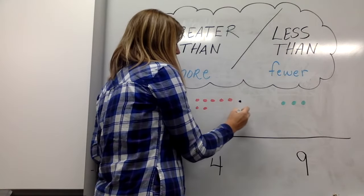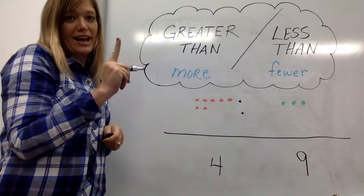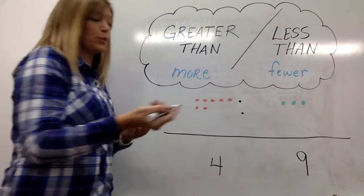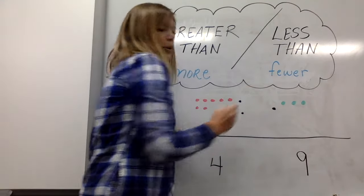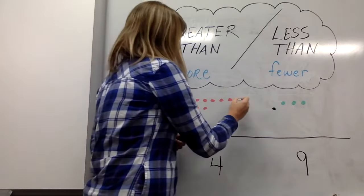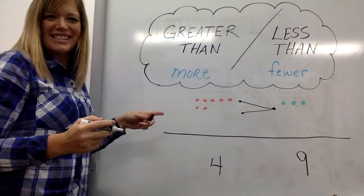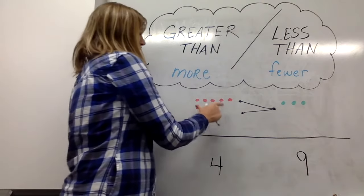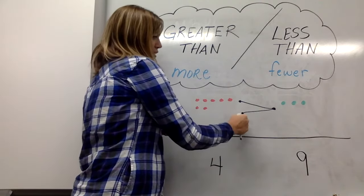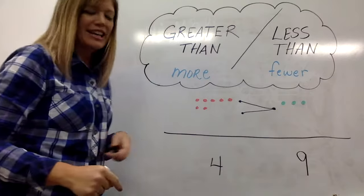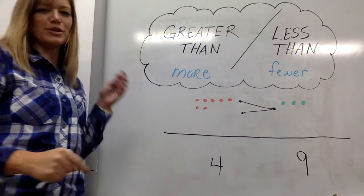I'm going to put two dots kind of on top of each other. Put one dot by the set that has fewer. When I connect these dots it creates my inequality sign and I would read this as seven is greater than three. Okay let's try this with our numbers down below.